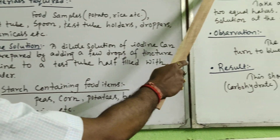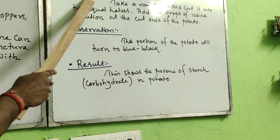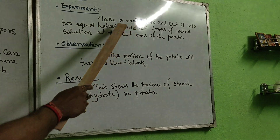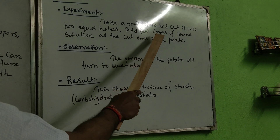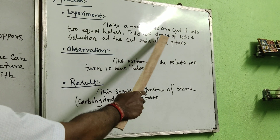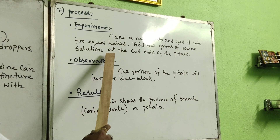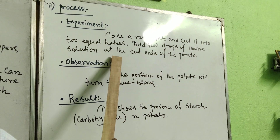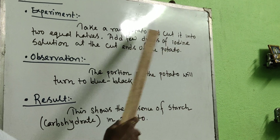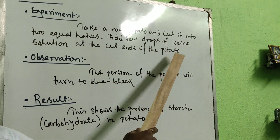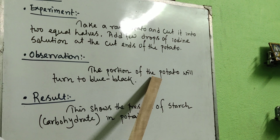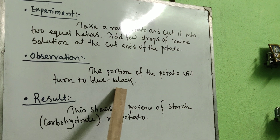The process of the experiment: take a raw potato and cut it into two equal halves. Add a few drops of the dilute iodine solution — which you have already prepared from tincture iodine — onto the cut ends of the potato. Then observe.